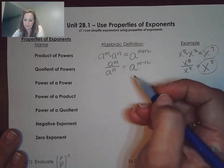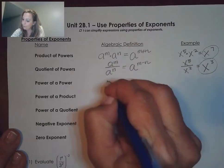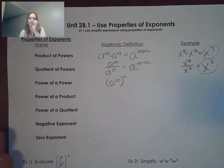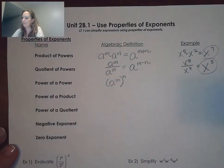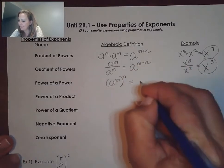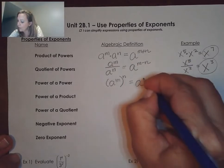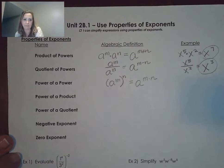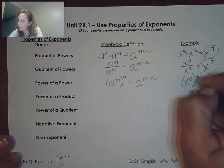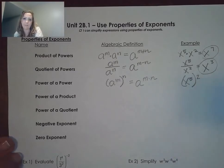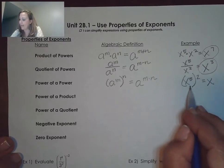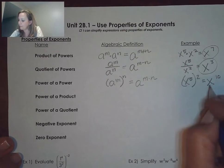In a power of a power, we would have something like A to the m, so we have a power, and then that's being raised to a power. When we have A to the m to the nth, we keep the base but then we multiply the exponents together. An example is x to the fifth raised to the second power. We keep the base x and then multiply 5 times 2 to get x to the tenth.